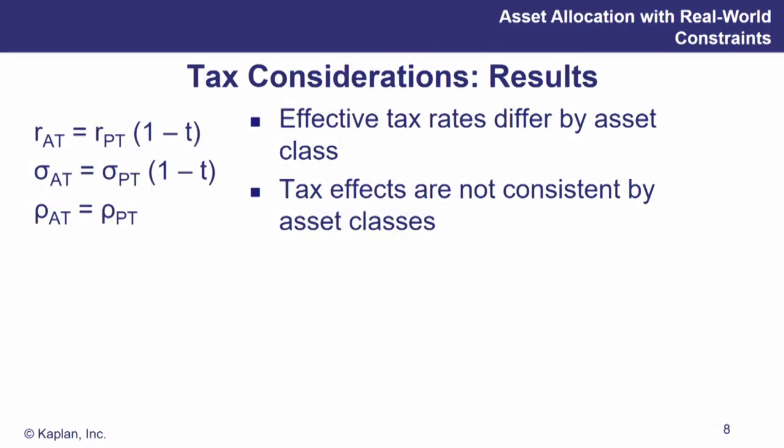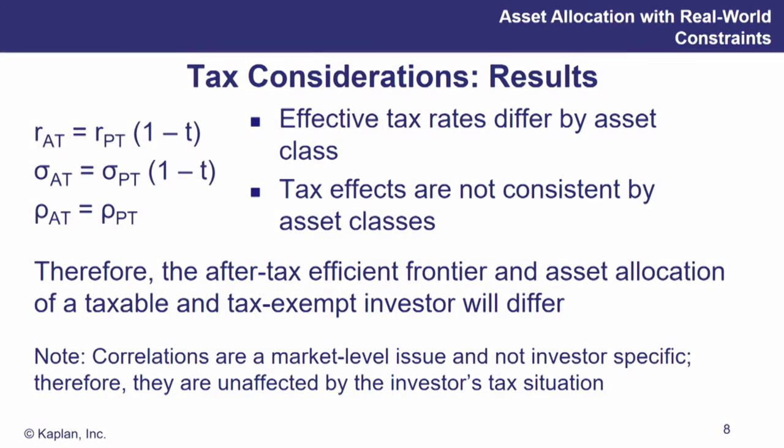Effective tax rates differ by asset class, and the higher the effective tax rate per asset class, the greater the impact on your after-tax result. Tax effects are not consistent across asset classes — simply the timing of cash flows matters. If I have a growth stock that pays no dividends and I have a buy-and-hold stance, I'm postponing and deferring those taxes as far as possible into the future. On the other hand, if I own a bond throwing off cash flows every month, quarter, or six months, that's going to be current income with a tax impact every year. Correlations are a market-level issue and are unaffected by the investor's tax situation.